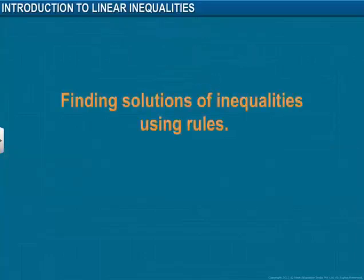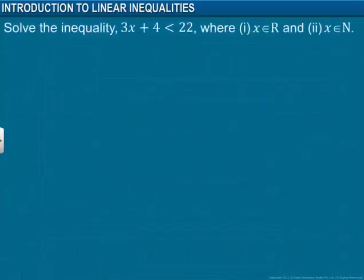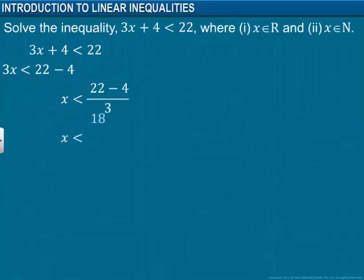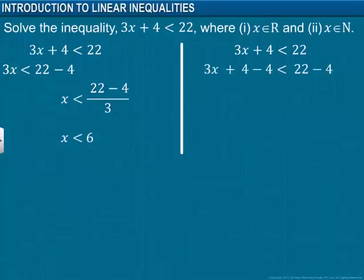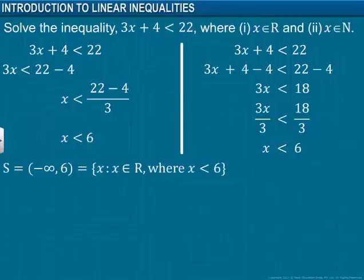Let's see how these rules can be helpful in finding solutions of inequalities. We will solve the inequality shown here and find the solution set. The general technique is to make the coefficient of x equal to 1. For this, we take all the constants to the other side of the inequality sign. First, we subtract 4 from both sides to get 3x less than 18. Next, we divide both sides by 3, making the coefficient of x equal to 1. Therefore, we get the solution as shown, and the solution set consists of all real numbers less than 6.